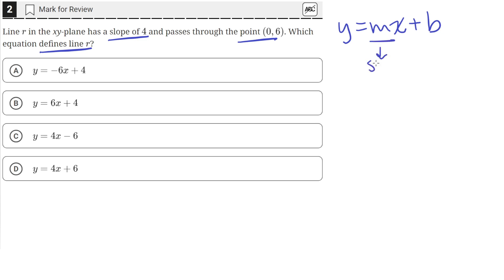where m is the slope and b is the y-coordinate of the y-intercept.